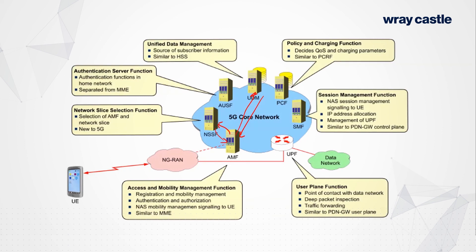The NSSF tells the AMF where to find all the relevant functions in the network. Generally there is a single AMF managing all slices for a UE, but functions like User Plane Functions and Session Management Functions may be separate on a per-slice basis — so there may be multiple SMFs, each responsible for a particular network slice. The NSSF will respond that for the mobile broadband slice the AMF should communicate with SMF-1, for example. Because of network slicing, the NSSF is essential to ensure the mobile is connected to the correct network functions to support those slices.